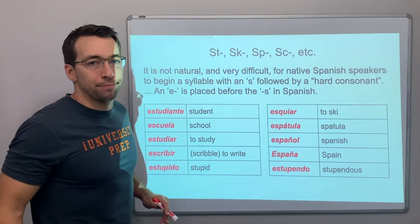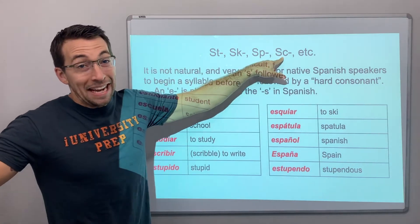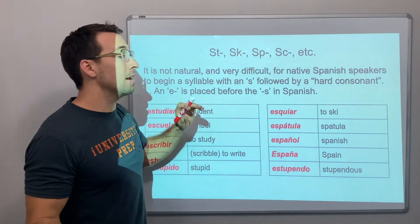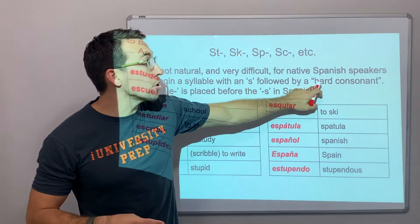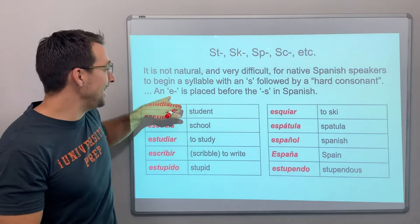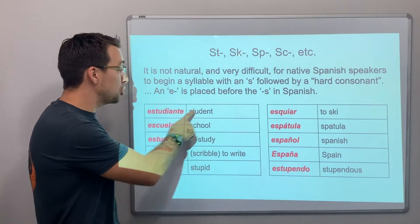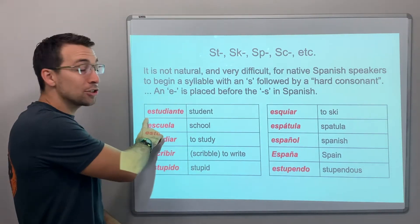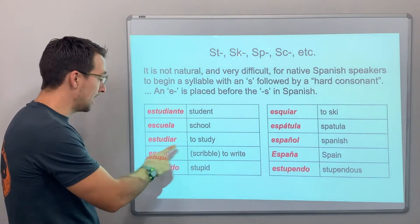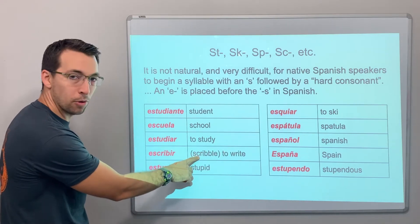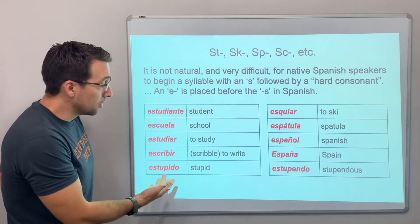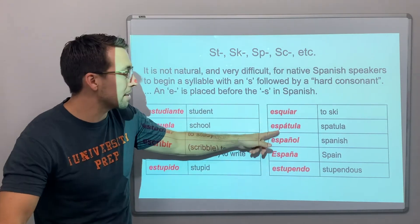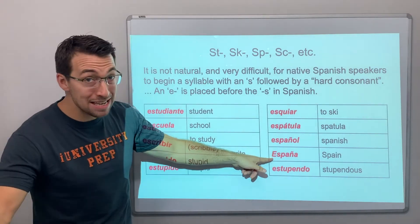S followed by a hard consonant — st, sk, sp, sk — is not a natural sound. It's super difficult for native Spanish speakers to create that sound at the beginning of a syllable. Typically, an E is placed in front of the S. Student → estudiante. School → escuela. Study → estudiar. Scribble → escribir. Stupid → estúpido. To ski → esquiar. Spatula → espátula. Spanish → español. Spain → España. Stupendous → estupendo.